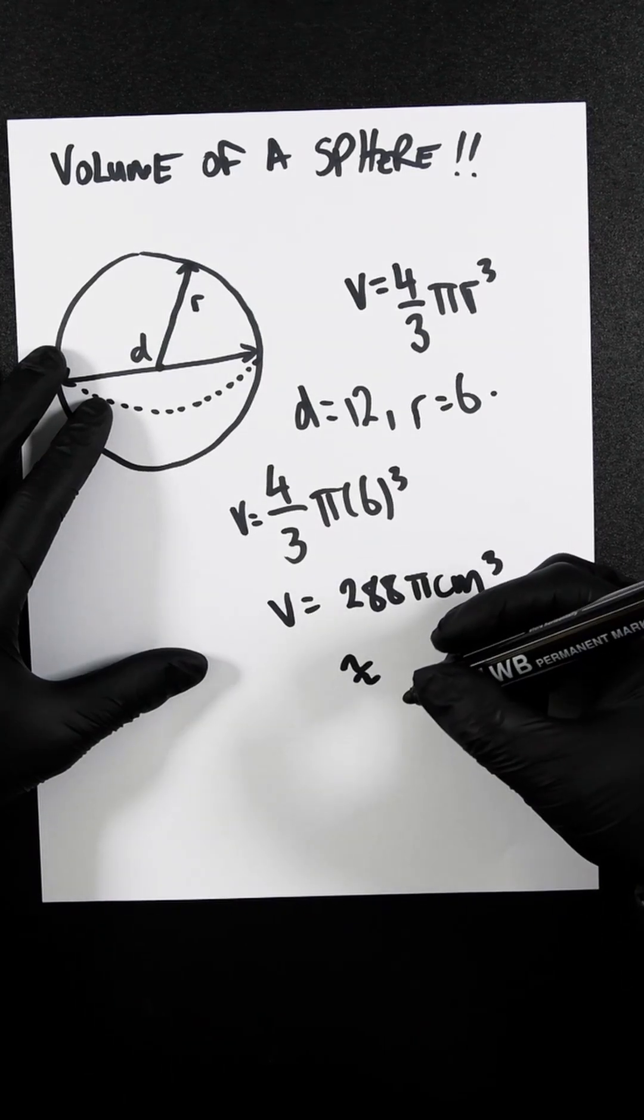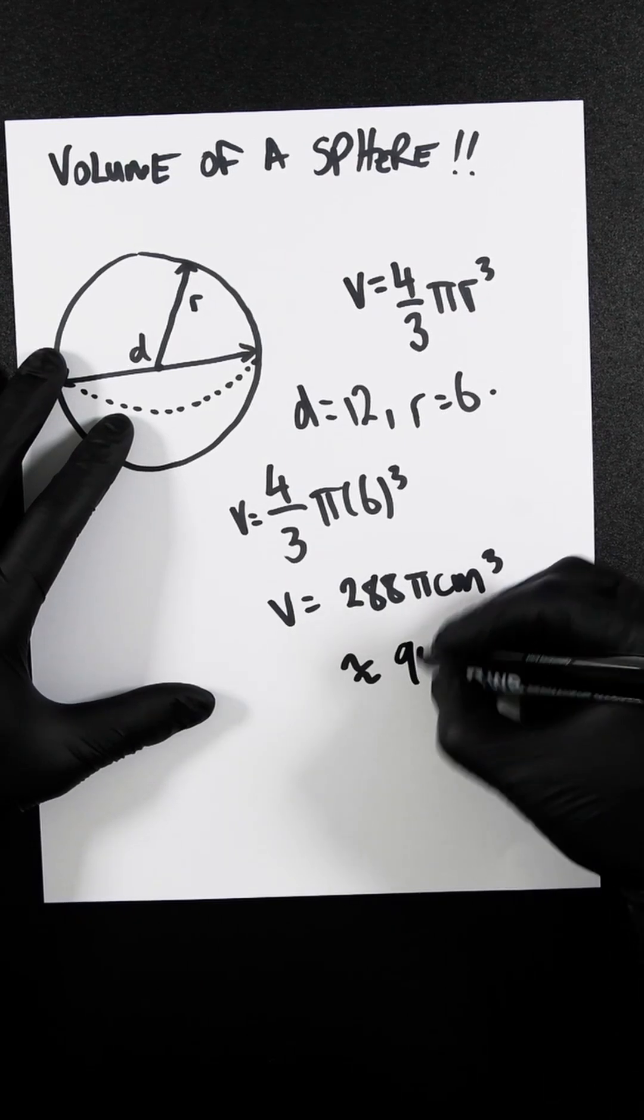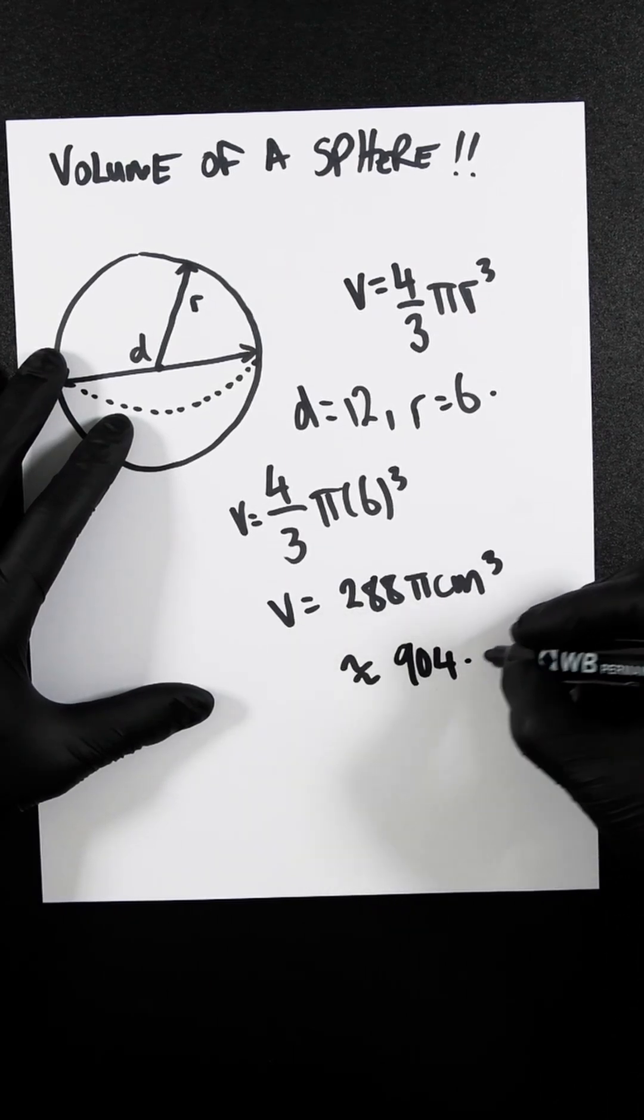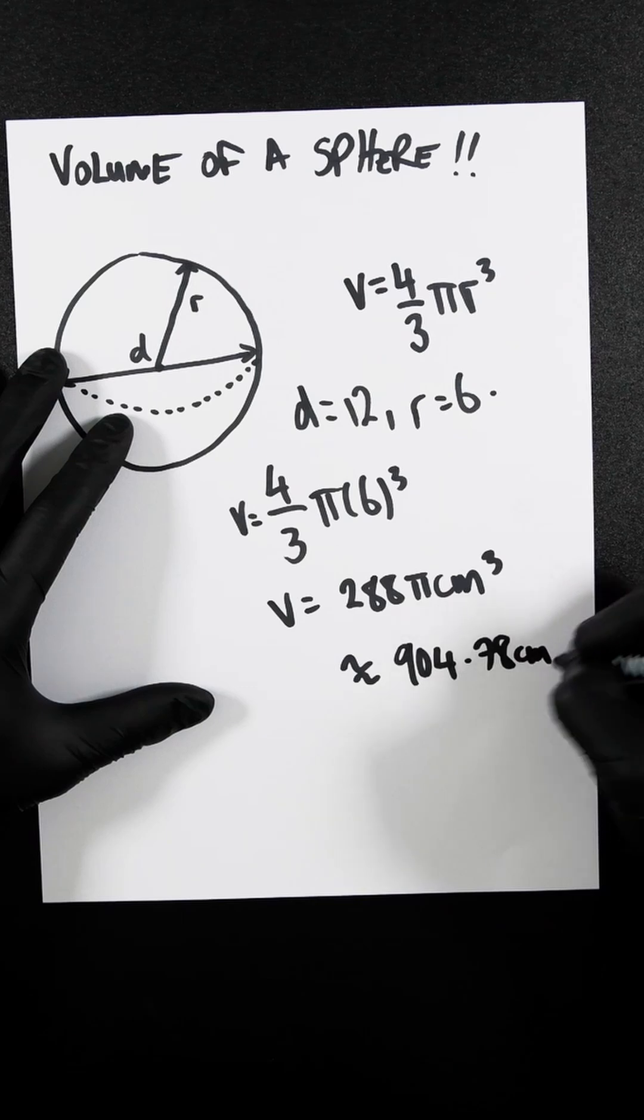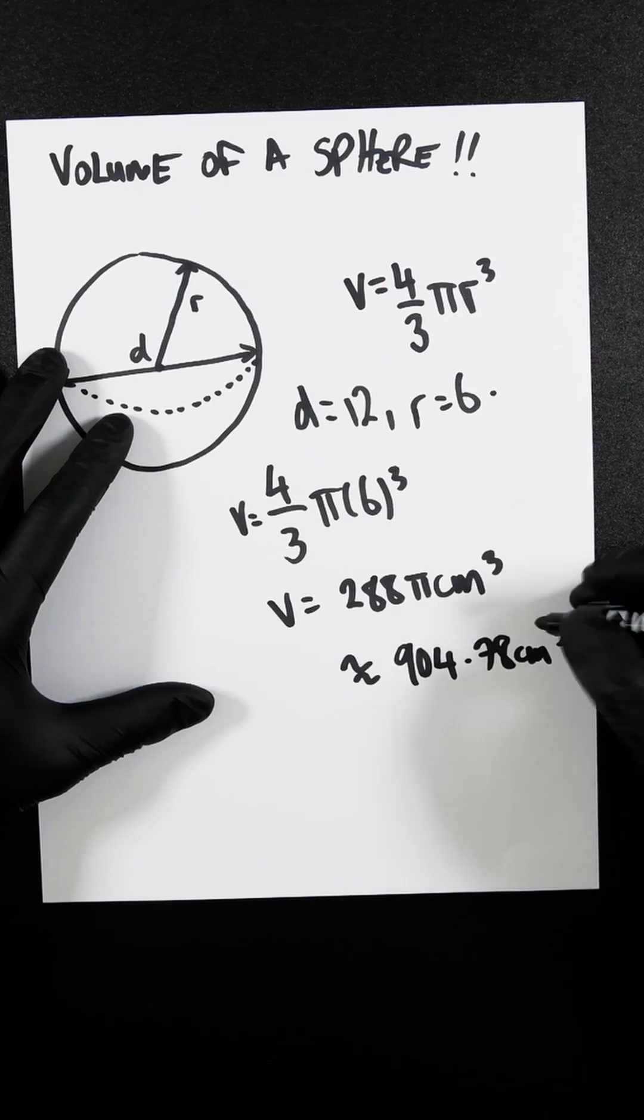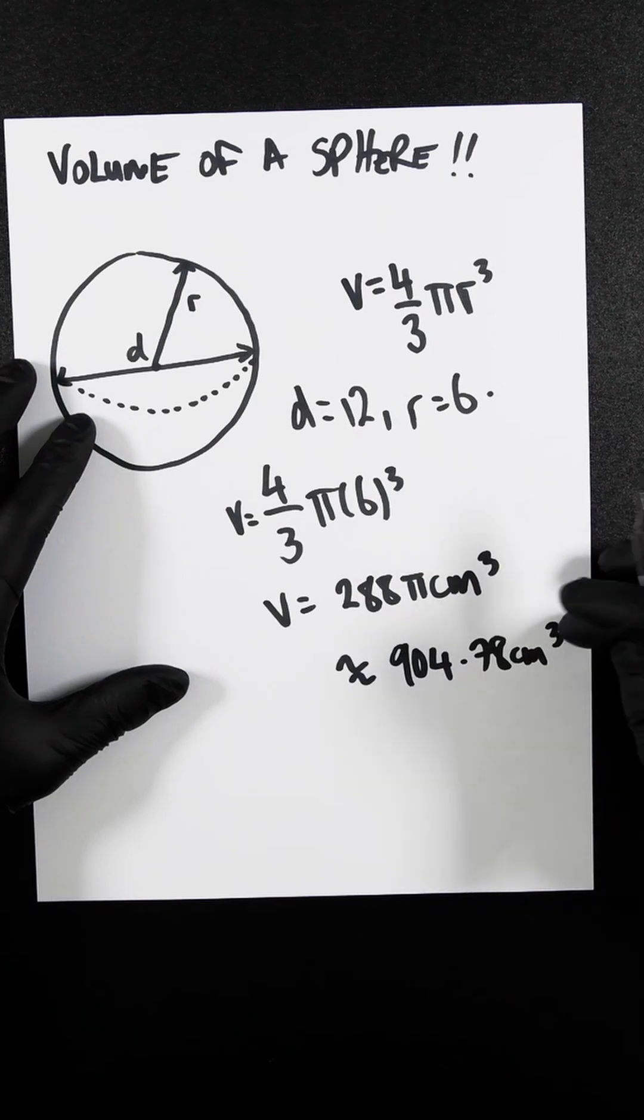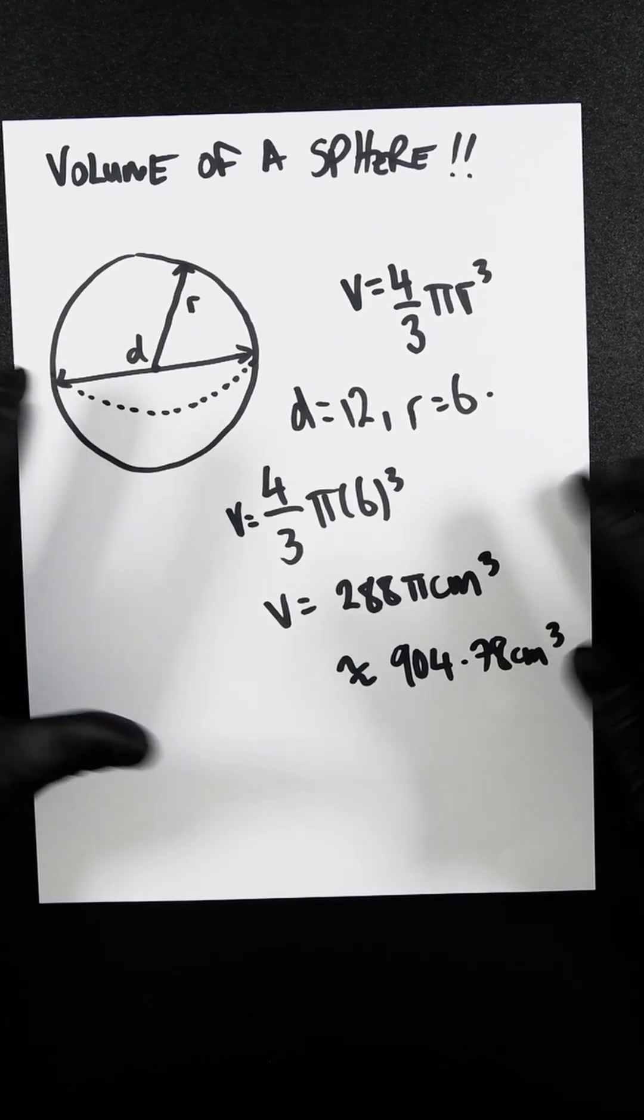Or very roughly, that is 904.78 centimeters cubed. Because it's volume, it is cubed. If you're finding the area, it is squared.